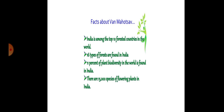Facts about Van Mahotsav: India is among the top 10 forested countries in the world. 16 types of forests are found in India. 11 percent of plant biodiversity in the world is found in India, and there are 15,000 species of flowering plants in India.